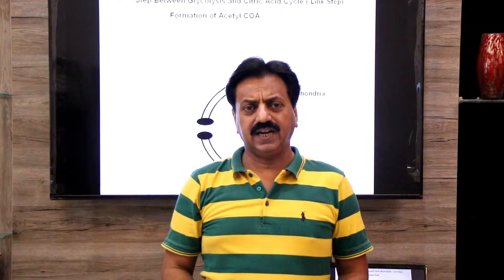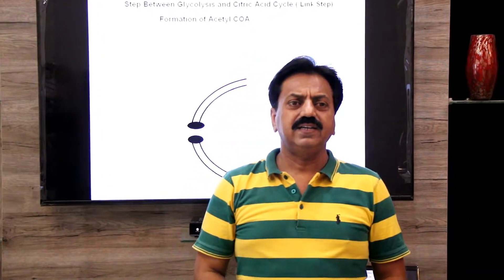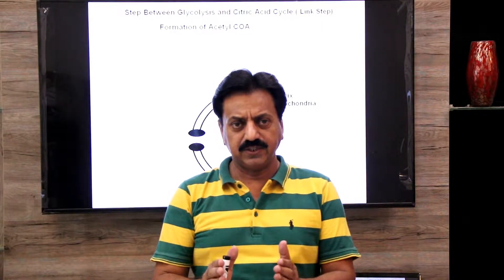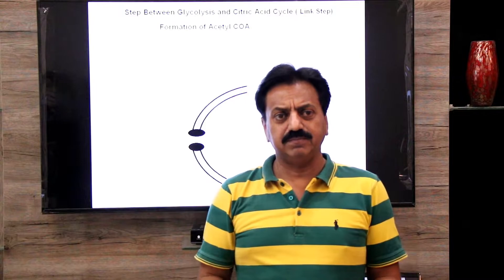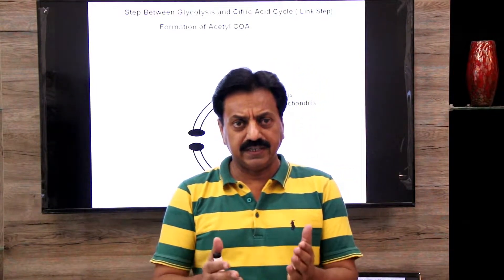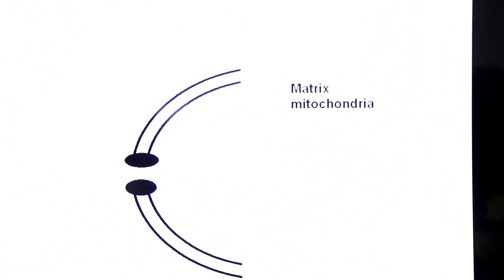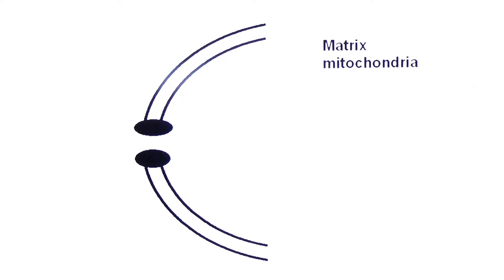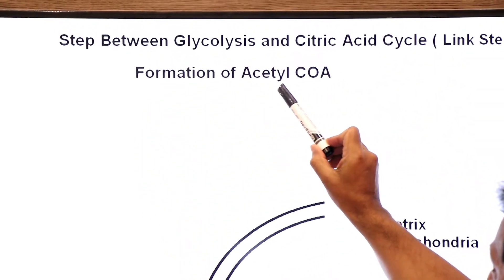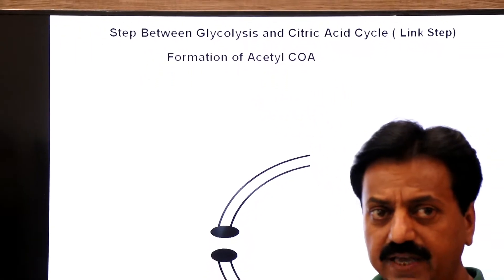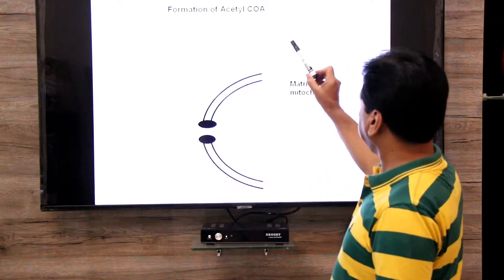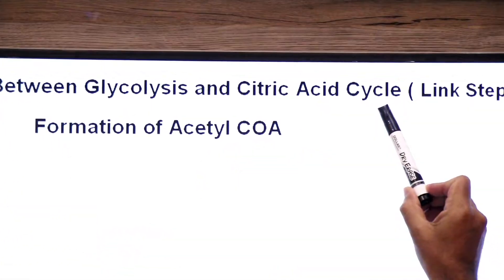Yesterday we discussed the pyruvate junction. It was said that if oxygen is not available, then the pyruvate goes through fermentation. But when oxygen is available, the pyruvate enters into the matrix of mitochondria and gets converted into acetyl coenzyme A. This acetyl coenzyme A then enters into the Krebs cycle, also known as the citric acid cycle.